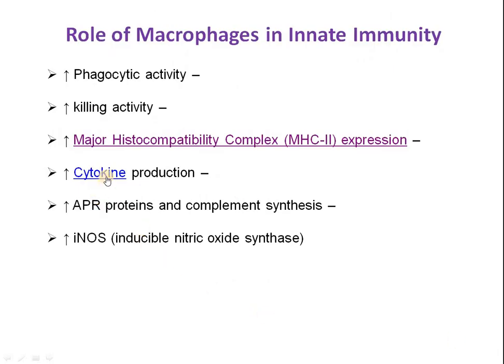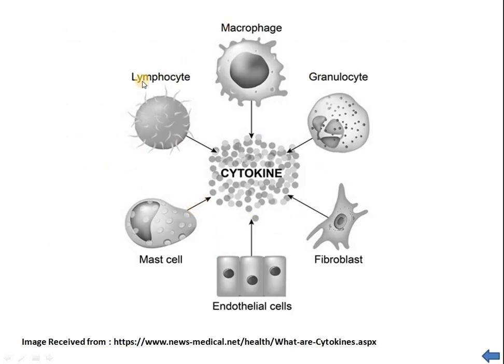Macrophages are also responsible for increased production of cytokines. Cytokines are chemical substances — protein, polypeptide, or peptide in nature — responsible for stimulating different immune cells so that immune functions are properly regulated. The cells responsible for cytokine production include lymphocytes, macrophages, granulocytes, fibroblasts, endothelial cells, and mast cells. These cytokines also stimulate other immune cells to maintain immunity properly.